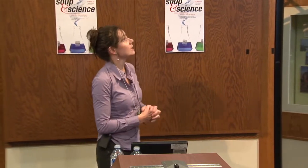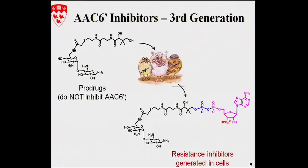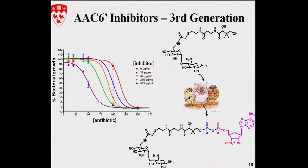We wanted to take advantage of our best inhibitor — the bisubstrate shown at the lower right. We envisaged feeding a molecule to the bacteria, and the bacteria would convert it to the inhibitor itself, which would then block the resistance. We tested this hypothesis and are happy to find that it works. As you can see on this plot, we're killing the bacteria faster and faster as we increase the concentration of inhibitor.